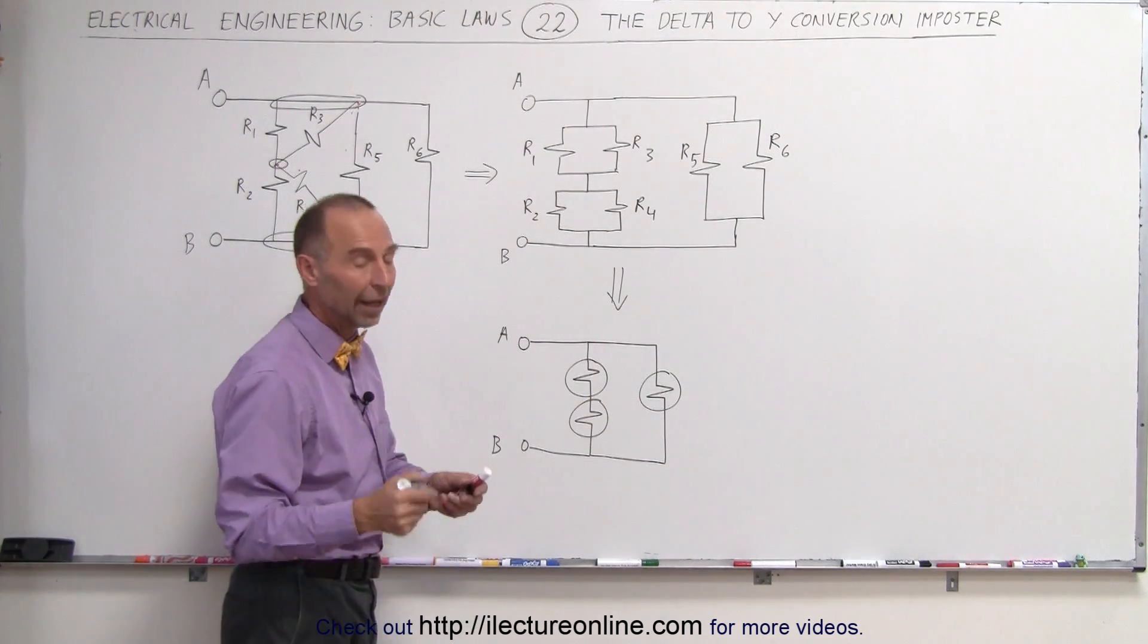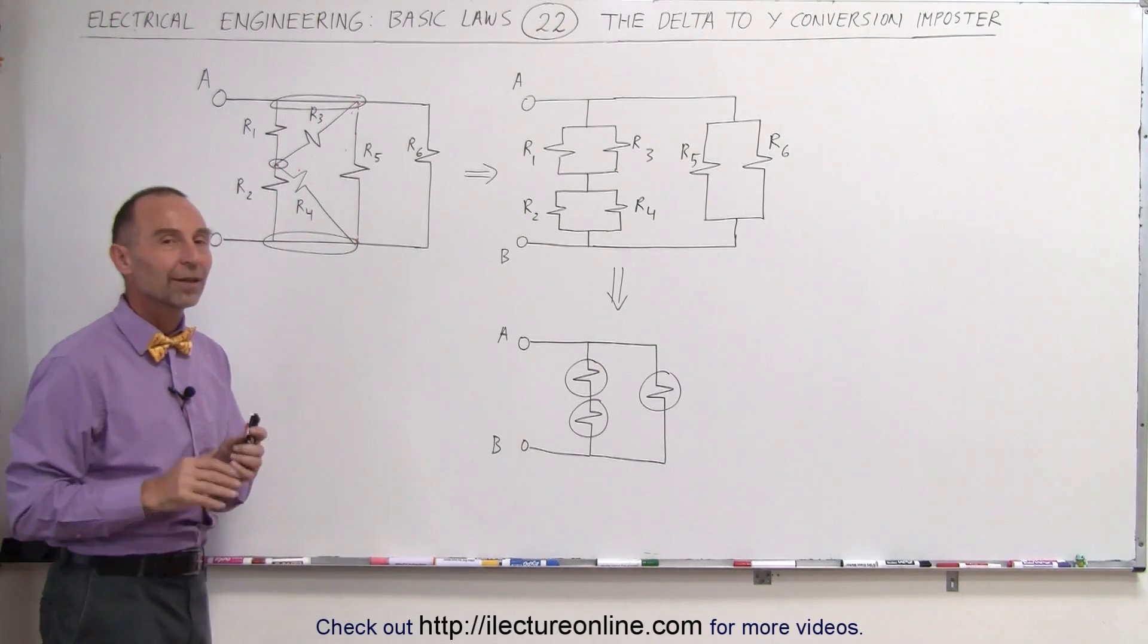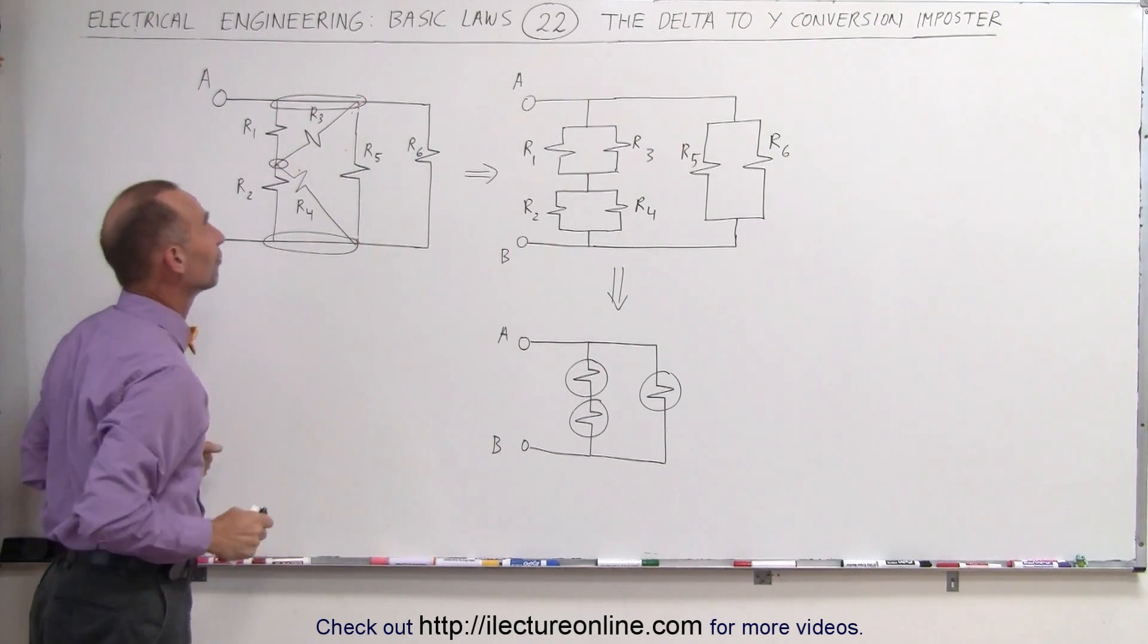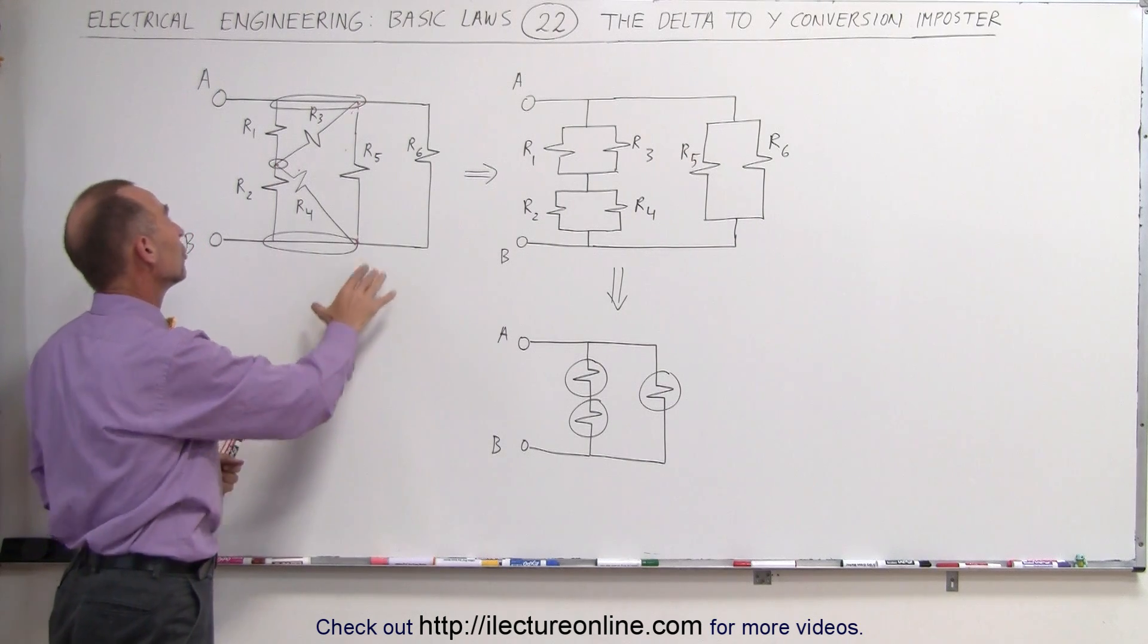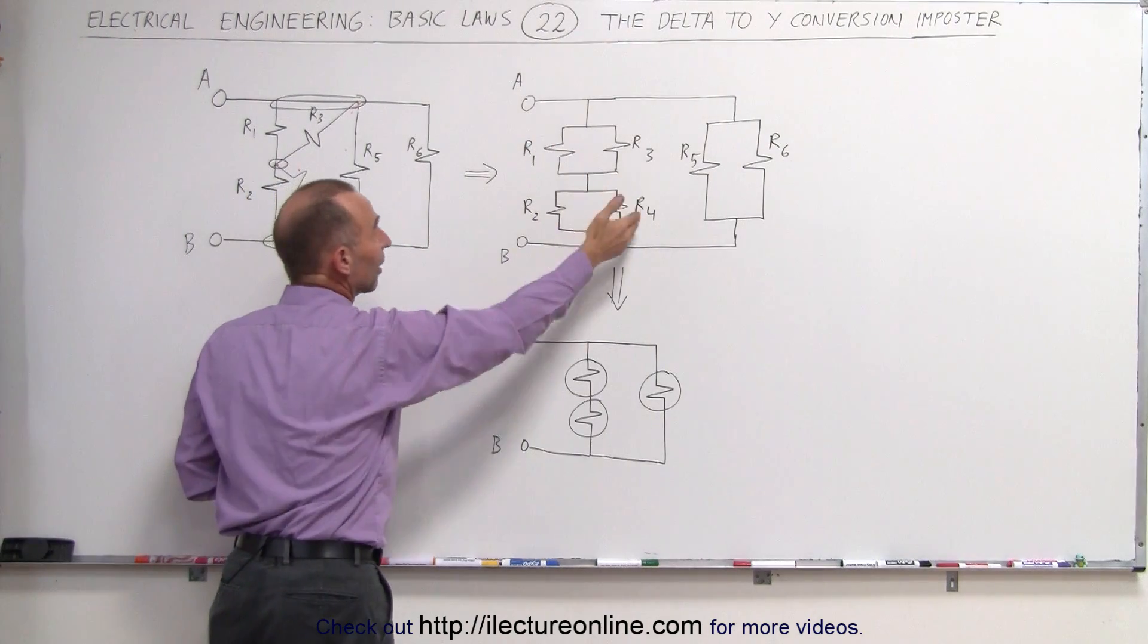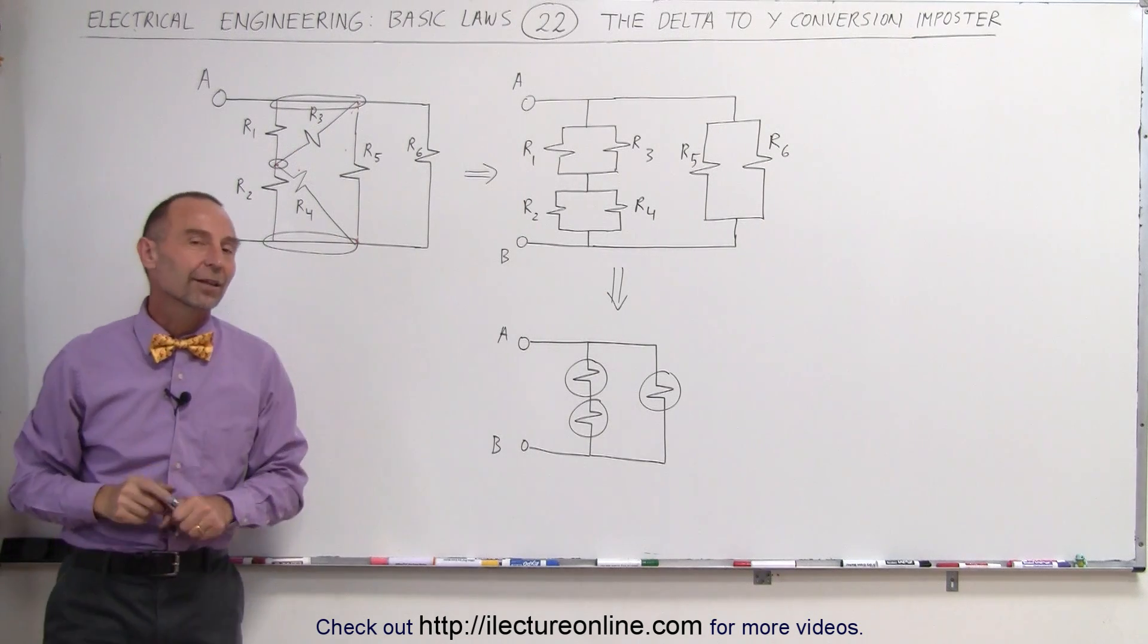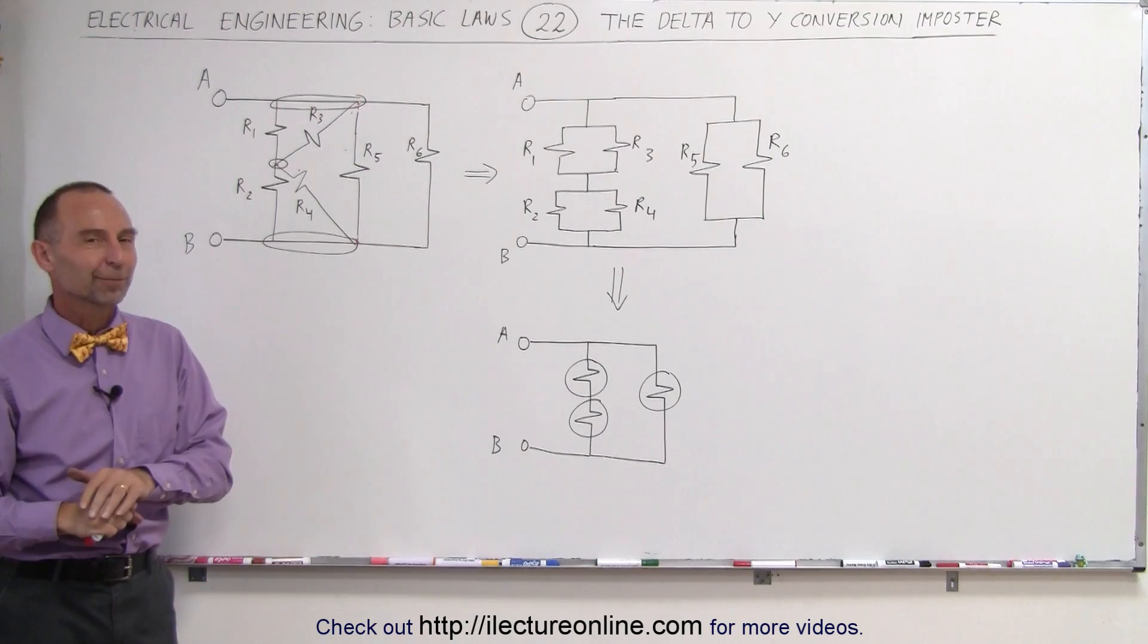Then you end up with two resistors in parallel and so forth. So definitely it doesn't always appear, it may appear, I should say, it may appear as if you need the Y to delta conversion or the delta to Y conversion. In this case, you do not want to do that. You would make a relatively simple problem into a more complex problem, and you can see that here it's not very difficult to solve the problem. And it's the exact same circuit as we had over there without doing the delta to Y conversion. That's why I call them imposters, and be careful for them.